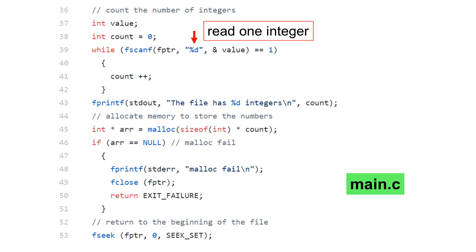Thus, we have to count the number of integers earlier in lines 39 to 42. If memory allocation fails, arr will be null. The program closes the opened file and returns EXIT_FAILURE.